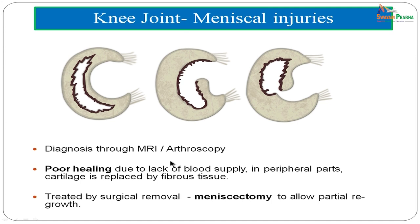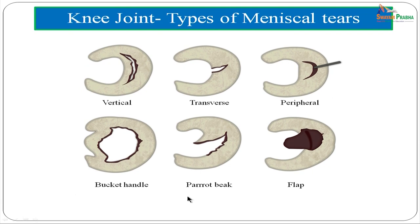Meniscal tear diagnosis is done through MRI or arthroscopy. Most injuries heal poorly due to poor blood supply, especially in the peripheral parts where cartilage is replaced by fibrous tissue. Meniscal tears may be treated by meniscectomy (surgical removal) to allow partial regrowth. Types of tears include vertical, transverse, peripheral, bucket-handle, parrot-beak, and flap tears.